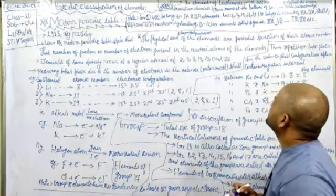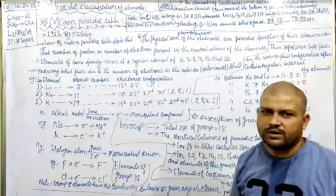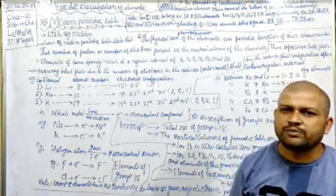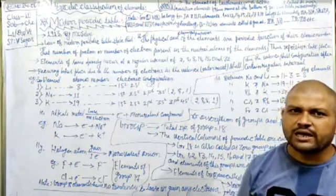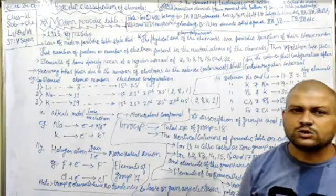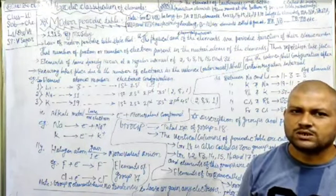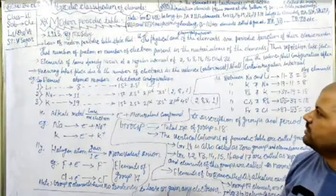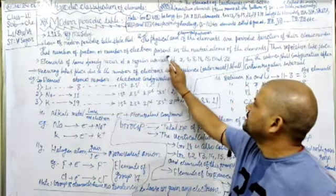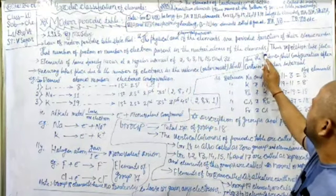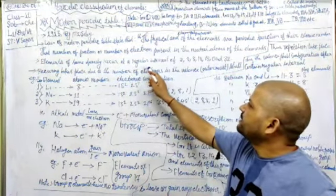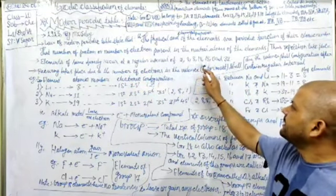The law states that the physical and chemical properties of elements are the periodic functions of their atomic number — not atomic masses. Moseley explained that it is not the periodic functions of atomic masses, but the periodic functions of atomic number. This means the number of electrons and protons present in neutral atoms is responsible for the periodic functions of the elements.